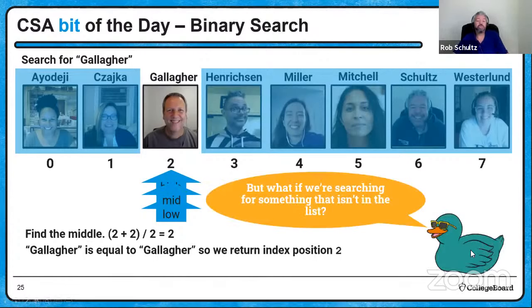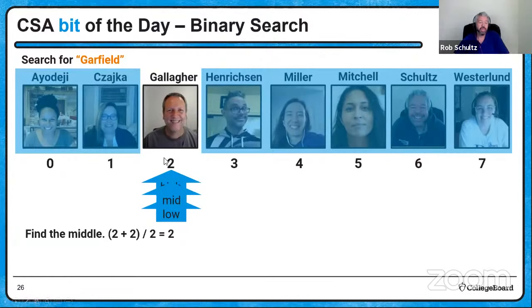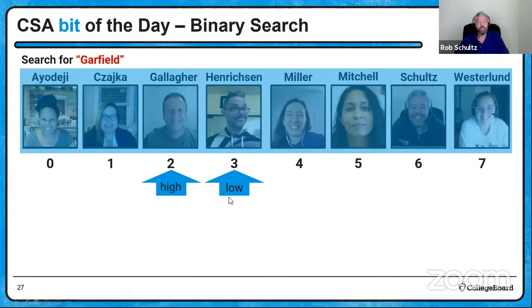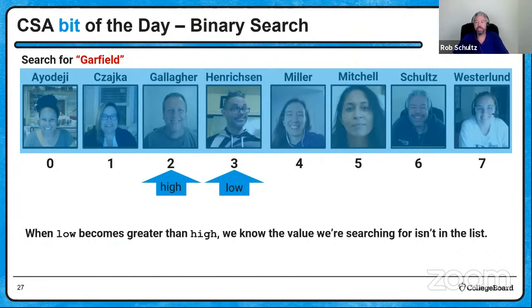What if we search for something not in the list? For sequential search, we go all the way to the end and return negative one. For binary search, imagine searching for Garfield instead — we'd set low to mid plus one, pointing to where Hendrickson is, but we've already eliminated that. Our low position is now greater than our high position. When those boundaries cross, that's our sign we've passed the place where it would be if it was there. We return negative one to confirm Garfield is not in the list.